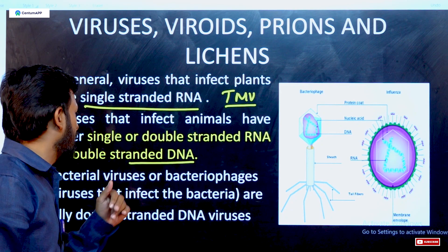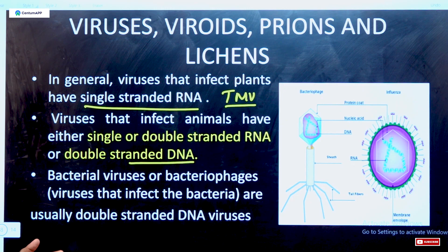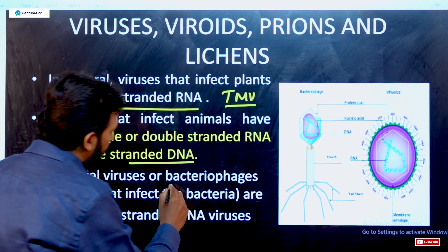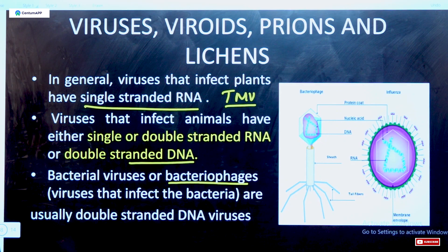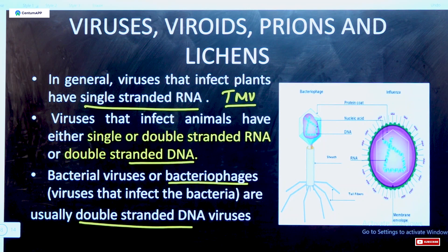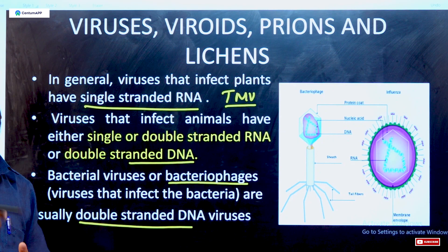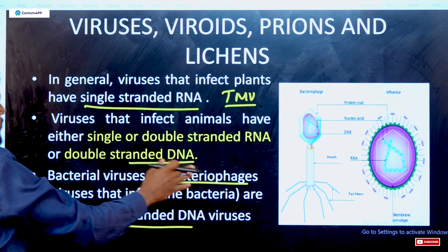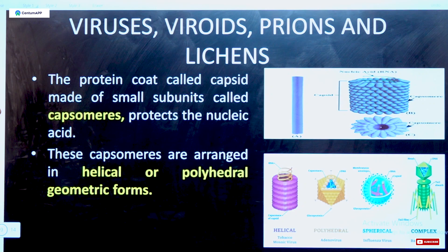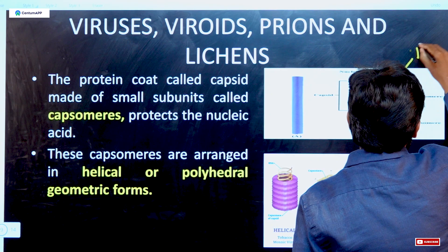In plants, single-stranded RNA occurs — as in Tobacco Mosaic Virus — except Cauliflower Mosaic Virus which has DNA. In animals, either single or double-stranded RNA or double-stranded DNA occurs; most animals have double-stranded DNA, except HIV virus which has RNA. In bacteria, the virus that affects bacteria is called bacteriophage — T4 bacteriophage. The protein coat of viruses is called capsid, made of subunits called capsomeres.